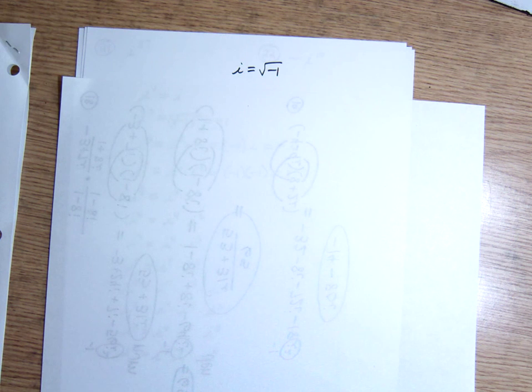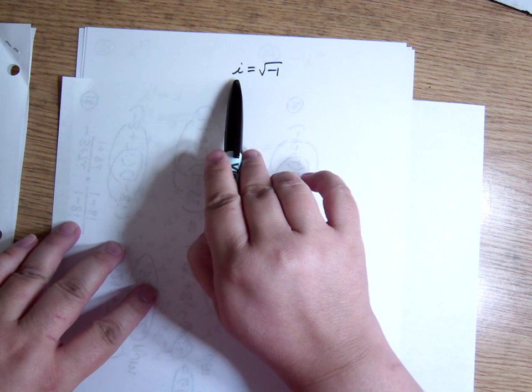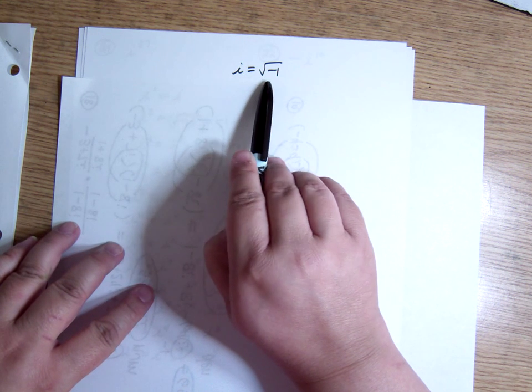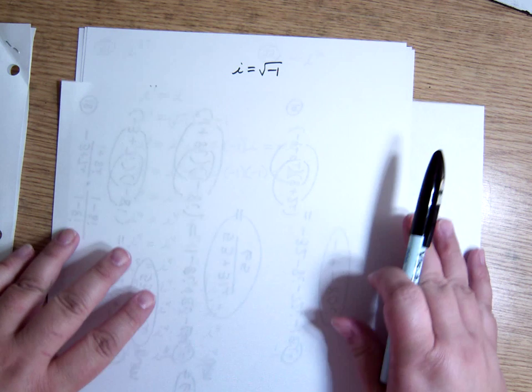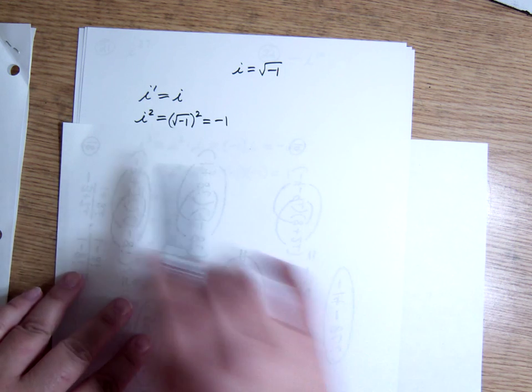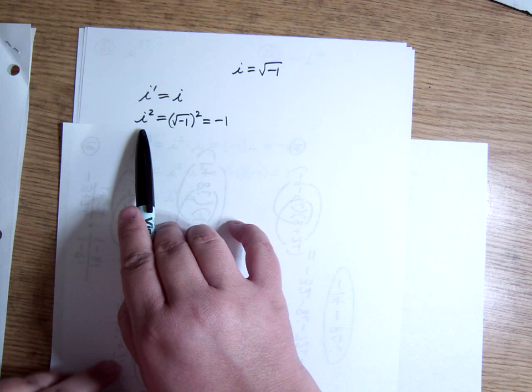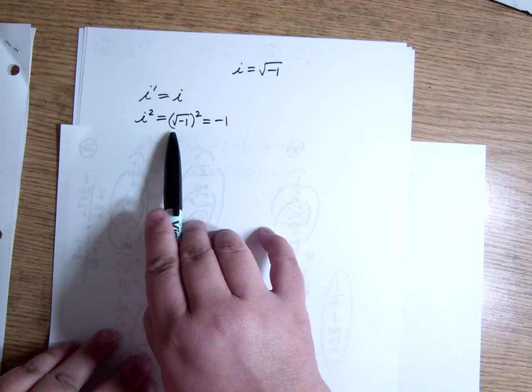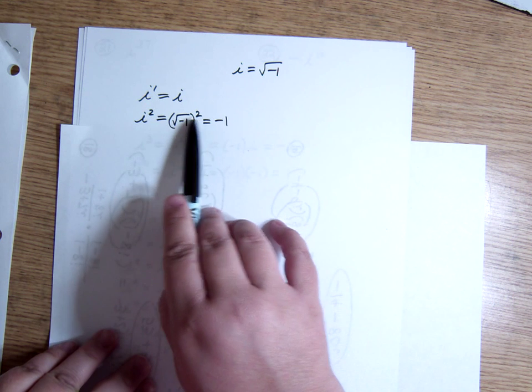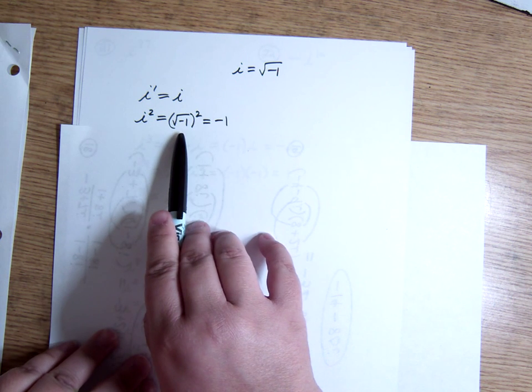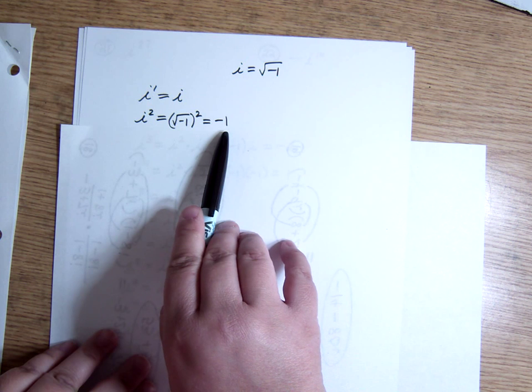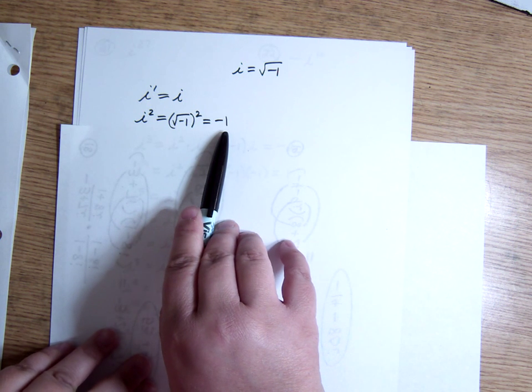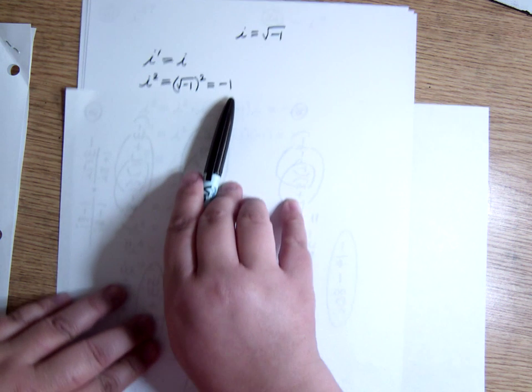All right, on page 4 of your quiz, we get into simplifying i to a power. So let's analyze this real quick. i means the square root of negative 1. So that means if I square i, I'm squaring the square root of negative 1. Remember when you have a radical or square root and then you square it, it just lifts off that square root and you just have negative 1. So i squared is negative 1. We've already talked about that a little bit.